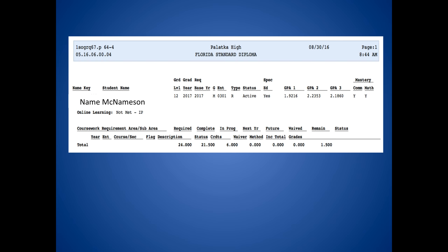GPA 2 is your weighted GPA. This GPA determines honor graduate status as well as what colleges look at. A 3.5 is the baseline for the honors graduate, so if you're planning on being an honor graduate, you want to shoot for a 3.5 under GPA 2. GPA 3 is your GPA in your core classes.